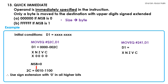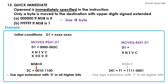MOVEQ 241, D1 is our next example. Notice that 241 does not have a dollar sign in front of it — this signifies that it is a decimal number. The equivalent hex code is F1. Since we know now that the operand is F1, we will check its MSB when it is written in binary format. The MSB is 1, thus the data moved into D1 is FFFFFFF1. The status register is updated to X1000 because the final data moved into D1 is a negative and non-zero number.